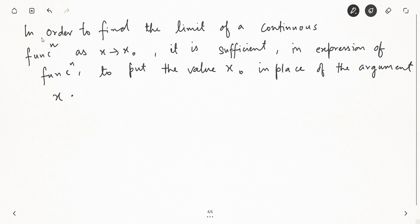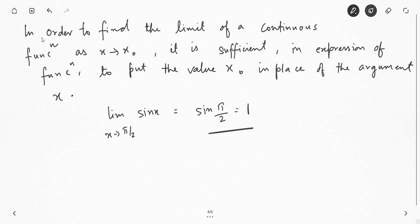So this should now be clear. If I write limit as x → π/2 of sin(x), this is equivalent to evaluating sin(π/2), which equals 1. So when a function is continuous and we want the limit as x → x₀, it is sufficient to substitute x₀ directly into the expression.